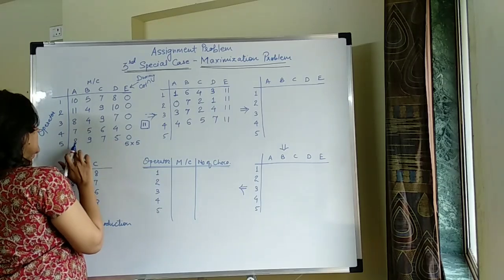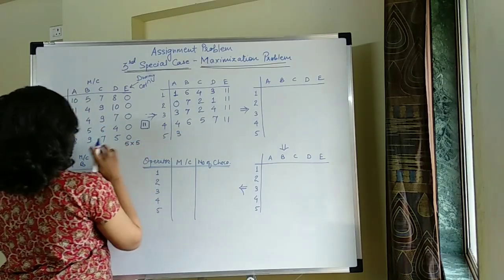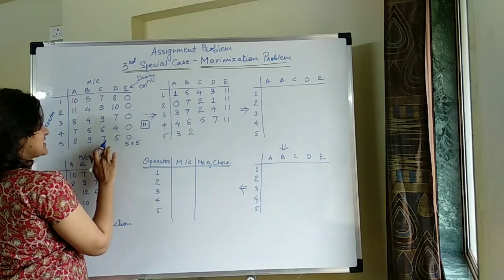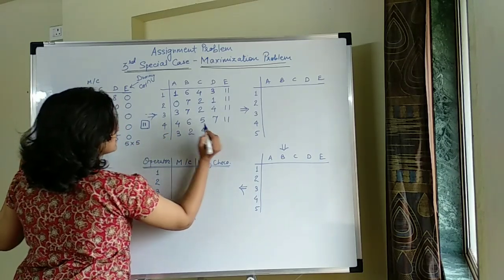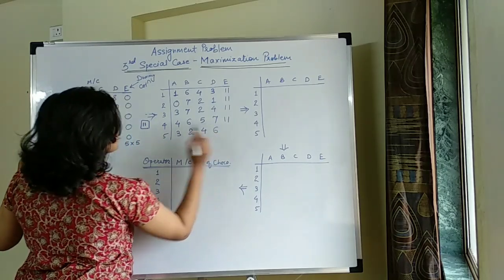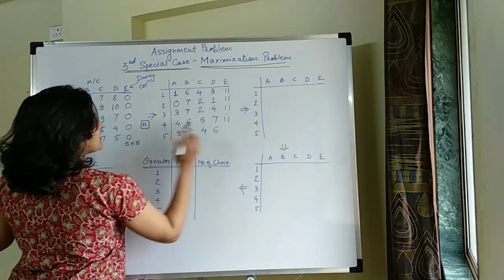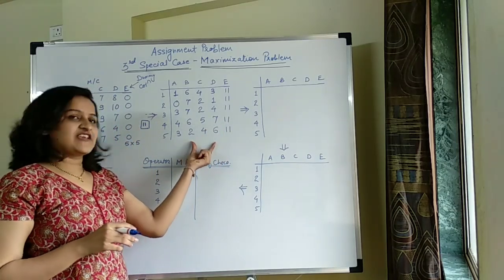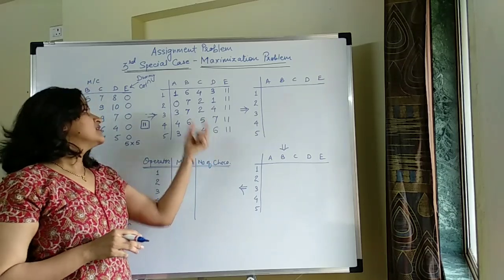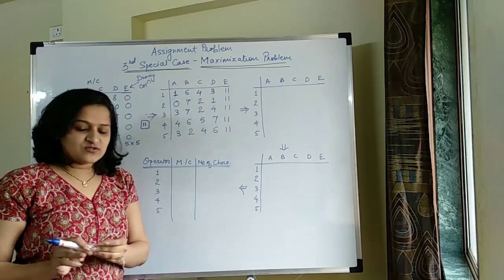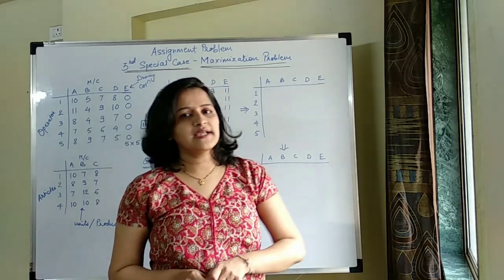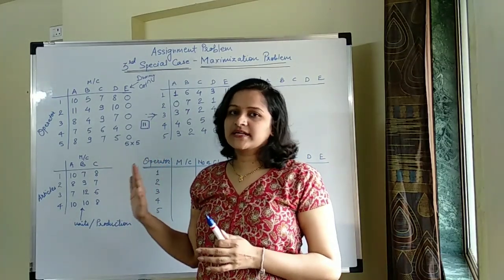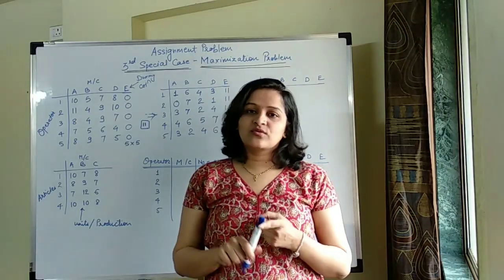For the last row, we continue subtracting all values from 11. Each element in that row is 11 minus the original value, following the same process as the previous rows. This completes the conversion of the maximization matrix into the minimization type matrix.